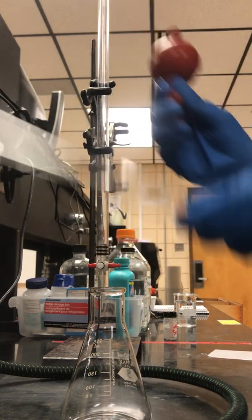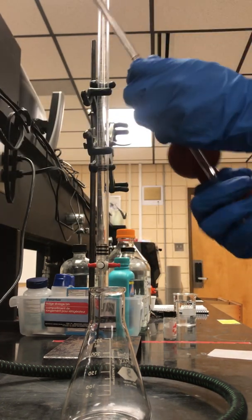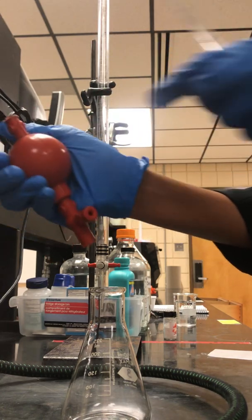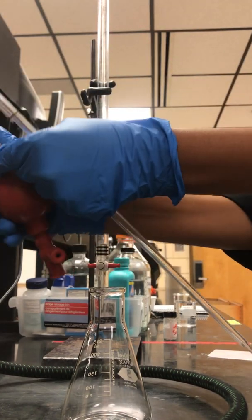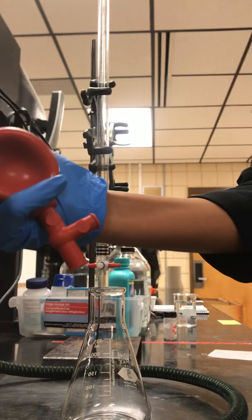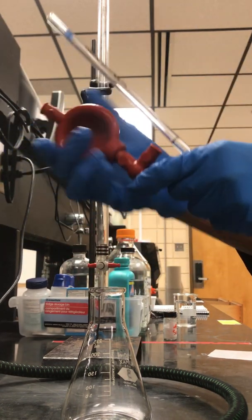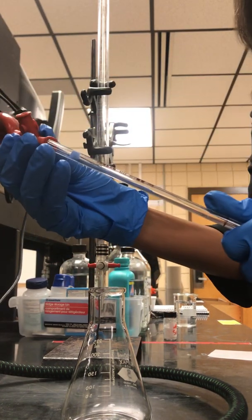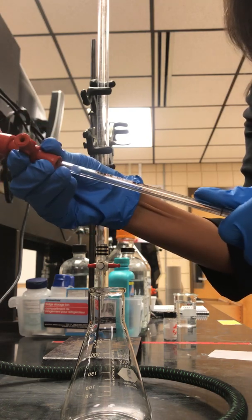Then the directions tell you to pipette 25 milliliters of hydrochloric acid, HCl. You're taking your pipette bulb and pipette. Press the A, squeeze it, then squeeze the bulb so the air can come out. Place the bulb on top of the pipette.